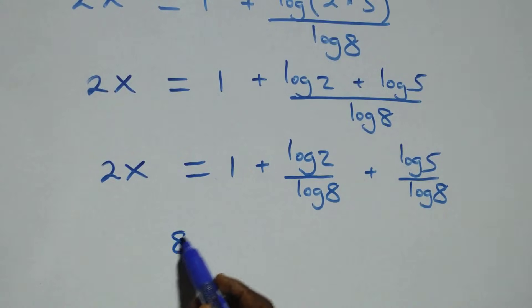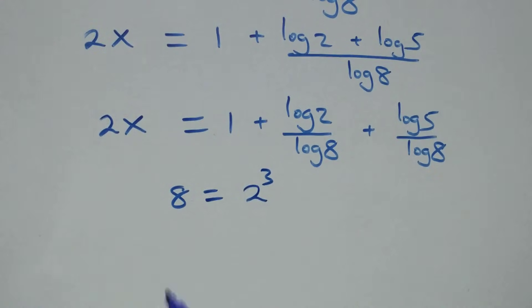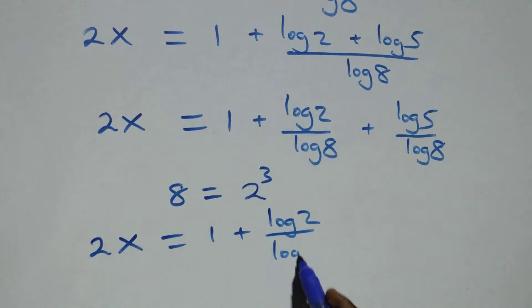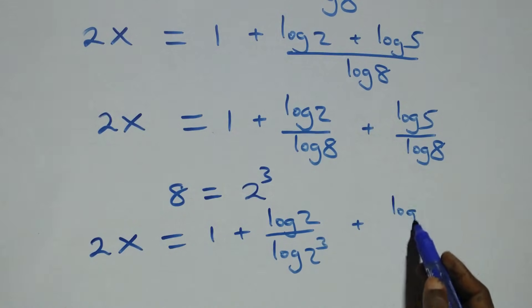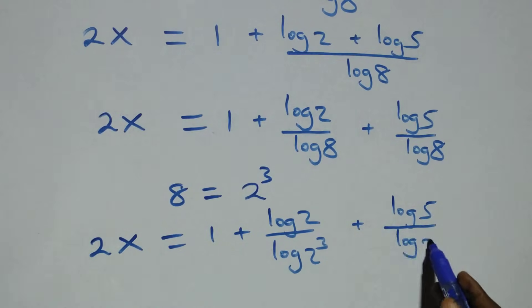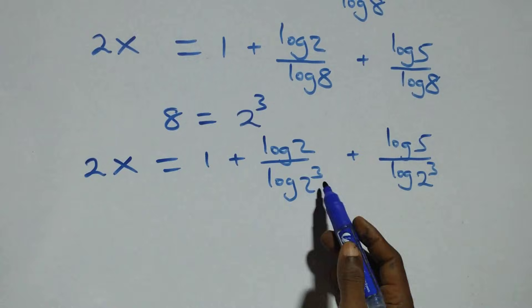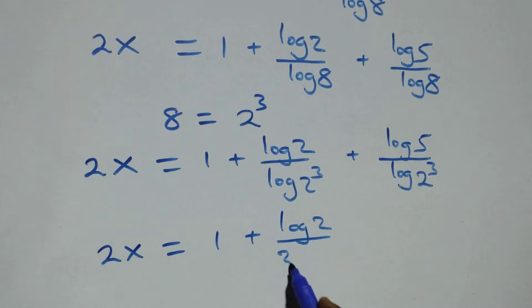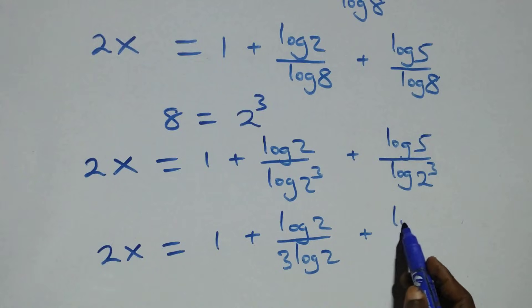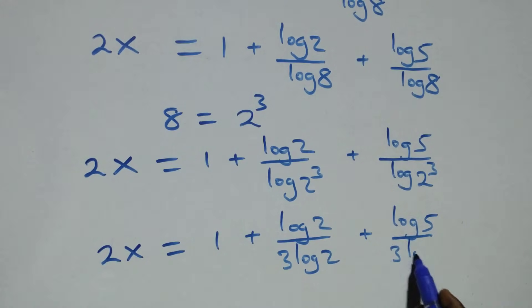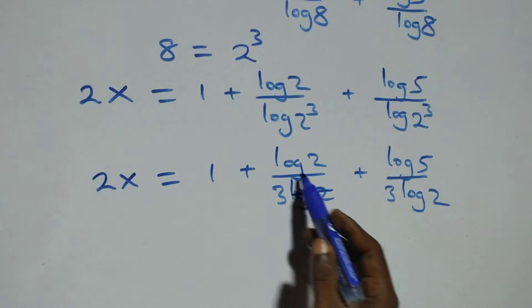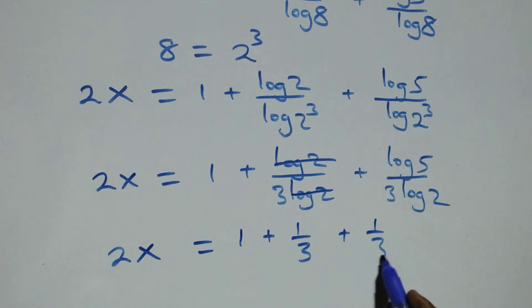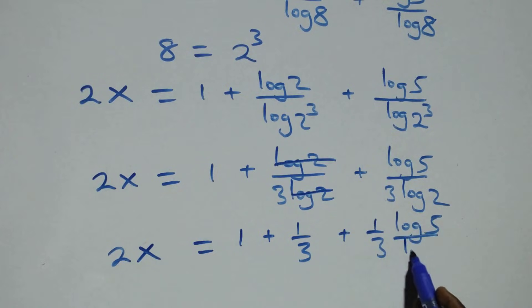Then 8 can be expressed as 2 times 2 times 2, that's 2 cubed. So we have 2x equals to 1 plus log 2 over log 2 cubed plus log 5 over log 2 cubed. Applying the power rule, 3 comes down: 2x equals to 1 plus log 2 over 3 log 2 plus log 5 over 3 log 2. Then log 2 cancels, giving 2x equals to 1 plus 1 over 3 plus log 5 over 3 log 2.